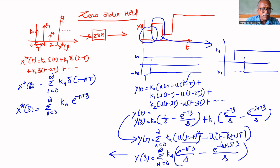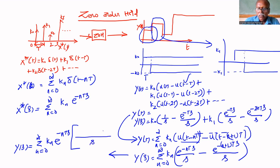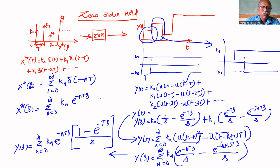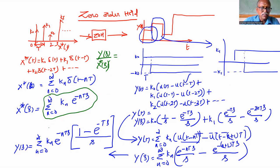This can be simplified as Y(S) equals sigma N equals 0 to infinity of K_N times e power minus NTs. You can take e power minus NTs outside. This is 1 over S, S is common. So 1 minus e power minus Ts. Taking N times out, that's why e power minus Ts. Therefore Y(S) over X(S) — this term is common and gets cancelled — giving Y(S) over X(S) equals 1 minus e power minus Ts, divided by S.